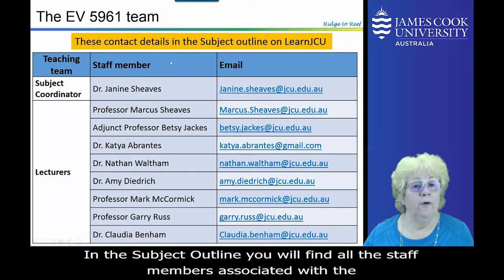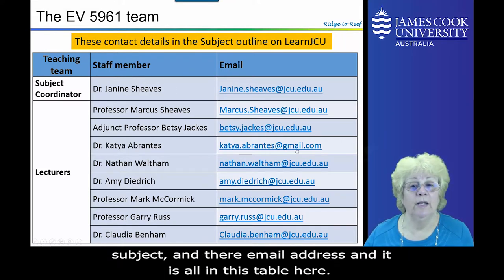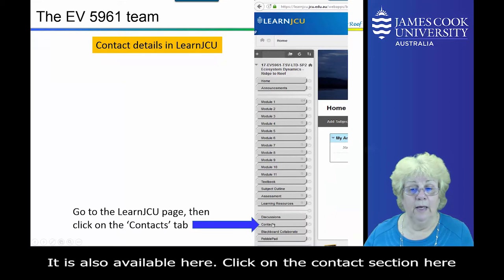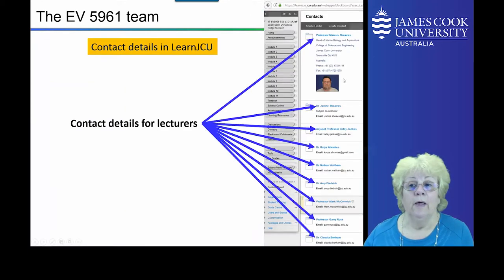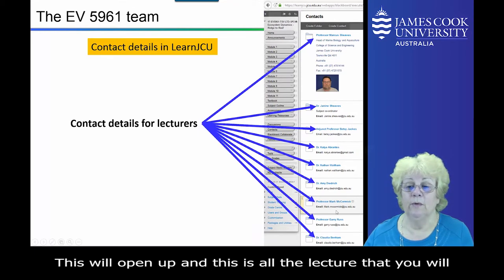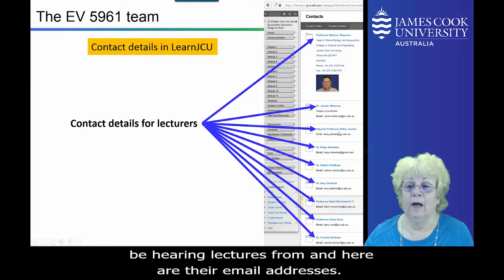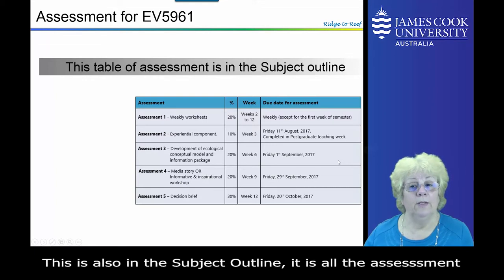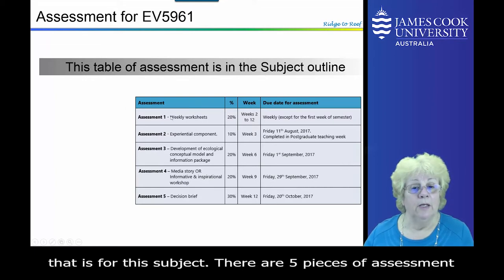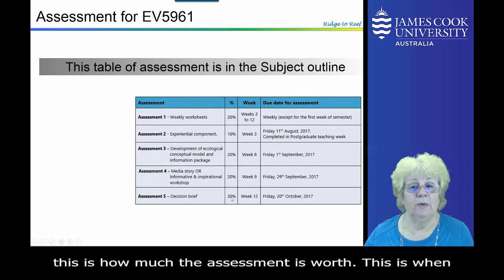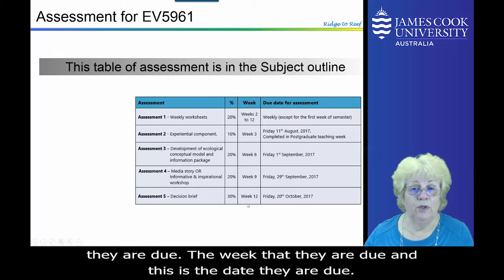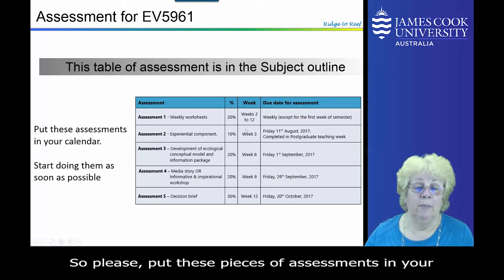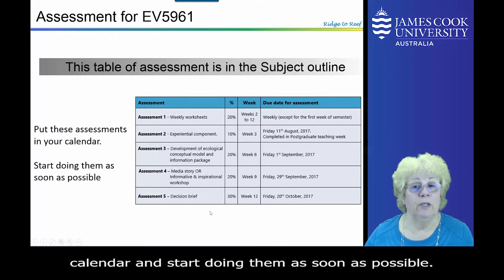In the subject outline, you'll find all of the staff members associated with the subject and their email addresses. It's also available in the contacts section, which lists all the lecturers and their email addresses. The subject outline also contains all of the assessment for this subject — there are five pieces of assessment, showing how much each is worth, when they're due by week, and the due date. Please put these pieces of assessment in your calendar and start doing them as soon as possible.